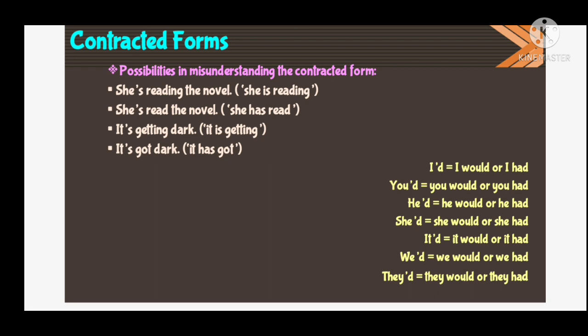Where we use 'I'd' — it can mean 'I would' or 'I had'. When we use 'I would' or 'I had', we use the contracted form 'I'd'. 'You'd' — 'you would' or 'you had'. 'He'd' — 'he would' or 'he had'. 'She'd' — 'she would' or 'she had'. 'It'd' — 'it would' or 'it had'. 'We'd' — 'we would' or 'we had'. 'They'd' — 'they would' or 'they had'.